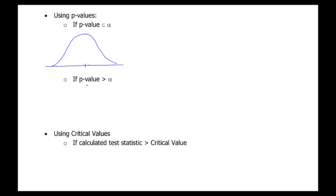Say that we're doing a right-tailed test, looking at areas on the right. We have a predetermined cutoff value of alpha — all of this area here is alpha. Then we calculate a test statistic, which gives us a p-value. If our test statistic ends up being out to the right, this shaded area is our p-value.